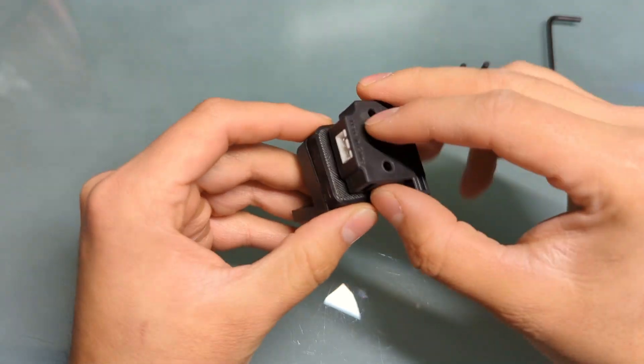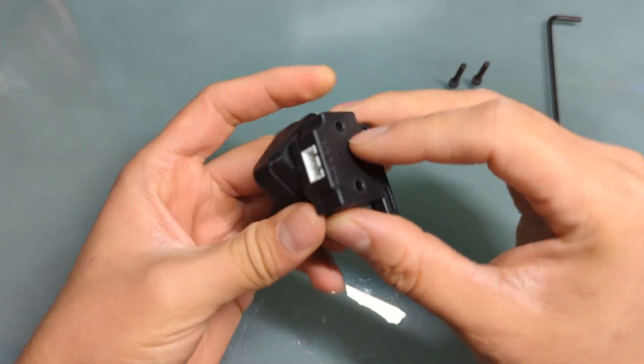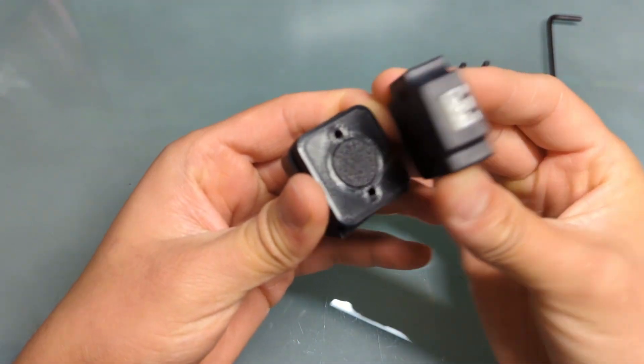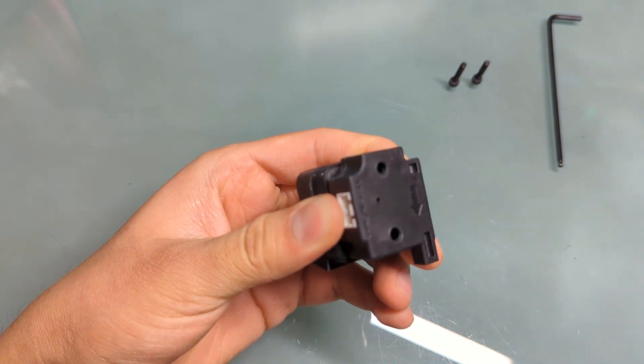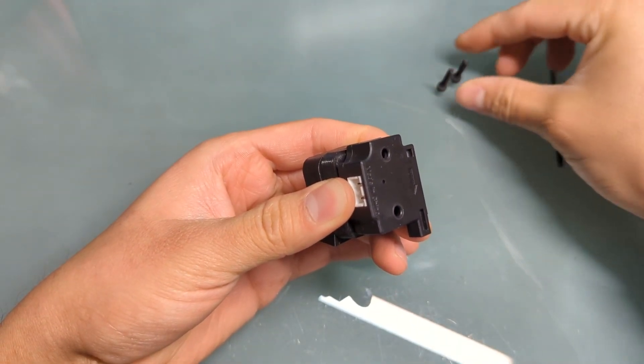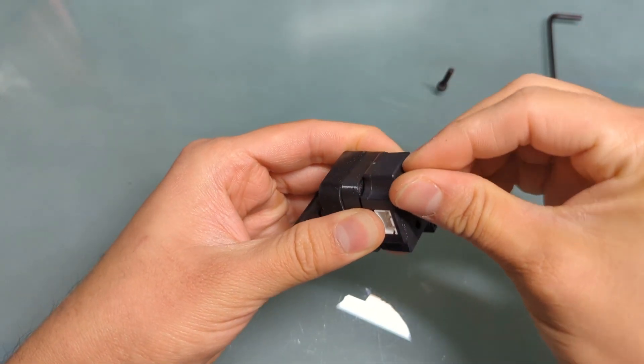Now let's go ahead and take your filament sensor. Make sure it lines up with the holes. Grab your M3.